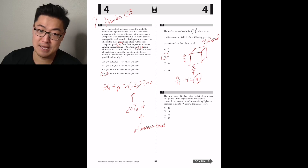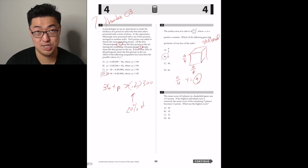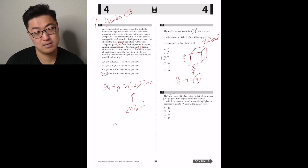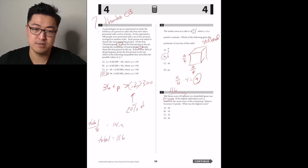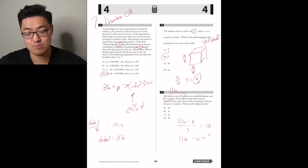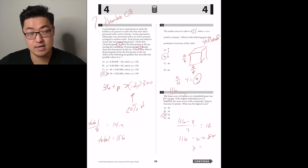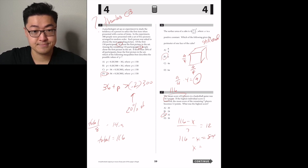The mean score of eight players in a basketball game was 14.5 points, so the total is 116. If the highest individual score is removed, the mean of the remaining seven players becomes 12 points. So 116 minus x divided by 7 equals 12, meaning 116 minus x equals 84, and x equals 32. Answer C.